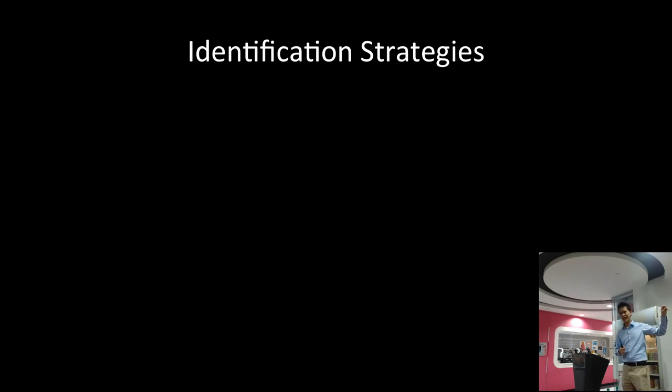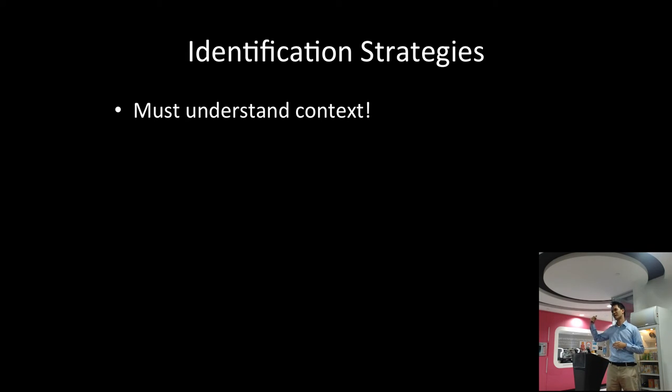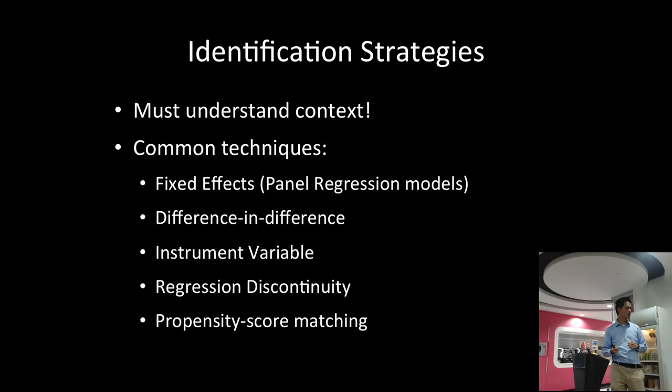My time is running a little short, so I'll try to give a brief overview of different identification strategies — what methods can we do to target causality? These are borrowed from the econometrics literature and methods, so they'll be different from CS machine learning. The most important first thing is we must understand the context. Are we looking at social media, cats, election results? We must understand the process of this iceberg. These are the five major techniques, which I'll briefly go over.